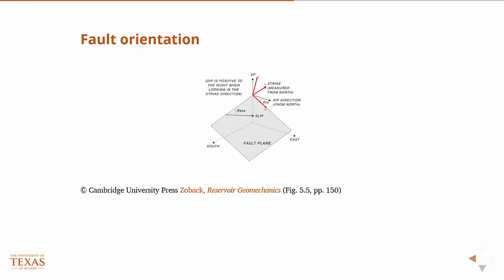Let's not forget what we're doing. We know our three principal stresses and directions somehow — we talked about ways you can estimate or measure those in the last class, at least certainly the vertical stress. So we have our three principal stresses and directions somehow given to us. We rotate those into a geographic coordinate system, which is aligned with north, east, and down.